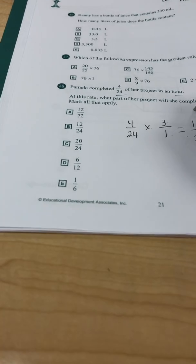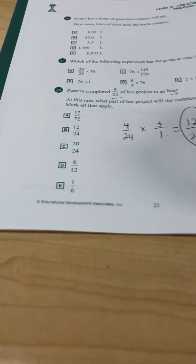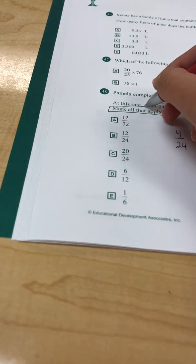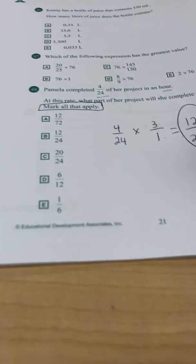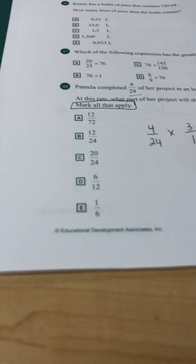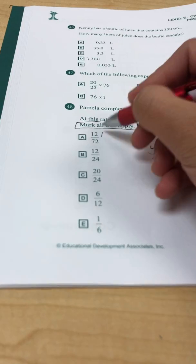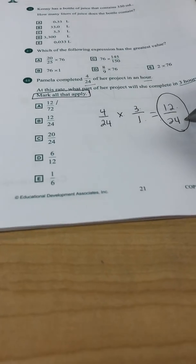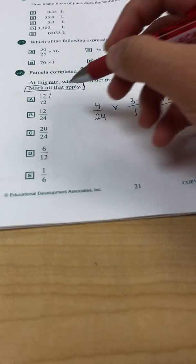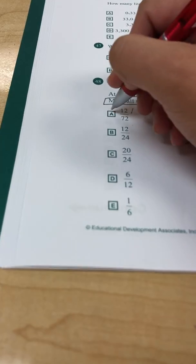So I need anything that's equivalent to this, because it's a mark all that apply. Well, my top number is 12, and for A, the top number is 12. That matches. But the bottom number I have in my answer says 24, and 72 and 24 are not the same, so that tells me automatically that's out.